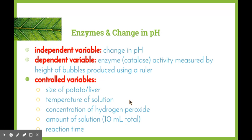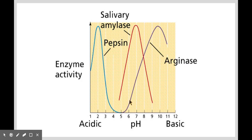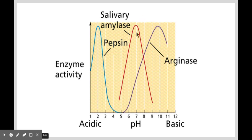We'll be going through how to do this in class. As we can see in this graph, different enzymes have a different pH at which their optimal activity falls. Pepsin is a very acidic enzyme found in the stomach, with an optimum pH of about 2. Salivary amylase, as the name suggests, is found in our saliva with a pH of about 7. And arginase is an intestine-based enzyme, so it falls more in the basic range.